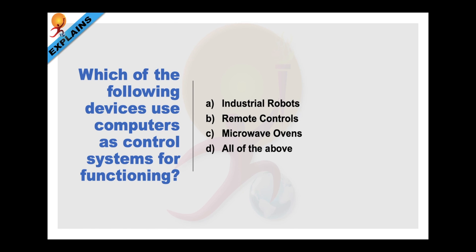Which one of the following devices use computers as control systems for functioning? Industrial robots, remote controls, microwave ovens, all of the above. Computers are used in almost all areas today. And they act as a control system for operating a number of household as well as industrial devices. So not only these, but also smartphones, personal computers etc. So answer is all of the above.